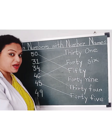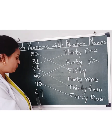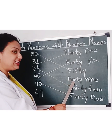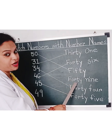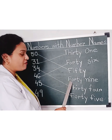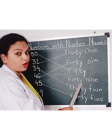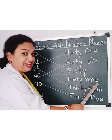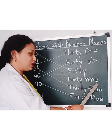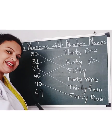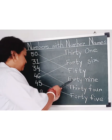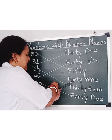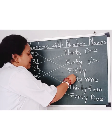Now, let's see the last number. 49. Yes, here it is — the number name for number 49. F, O, R, T, Y — Forty; N, I, N, E — Nine. Forty-Nine, 49. Let's match it. We will match the numeral 49 with its number name.